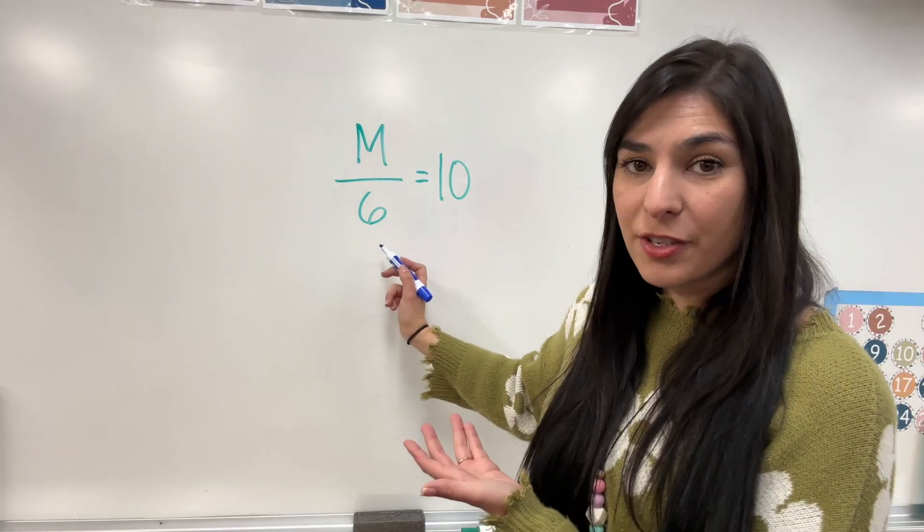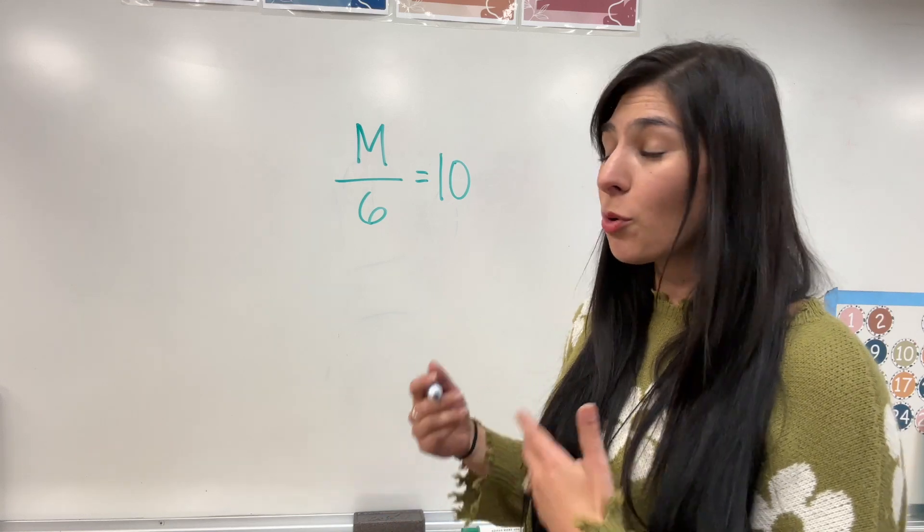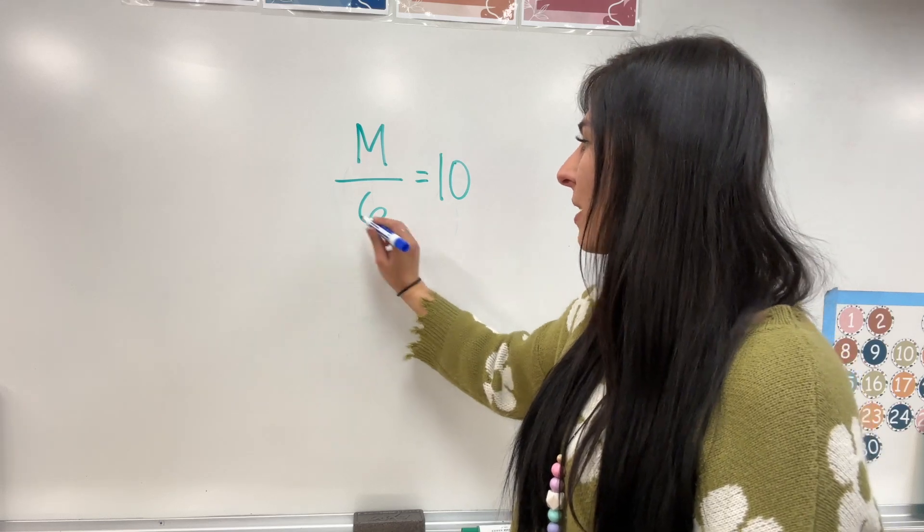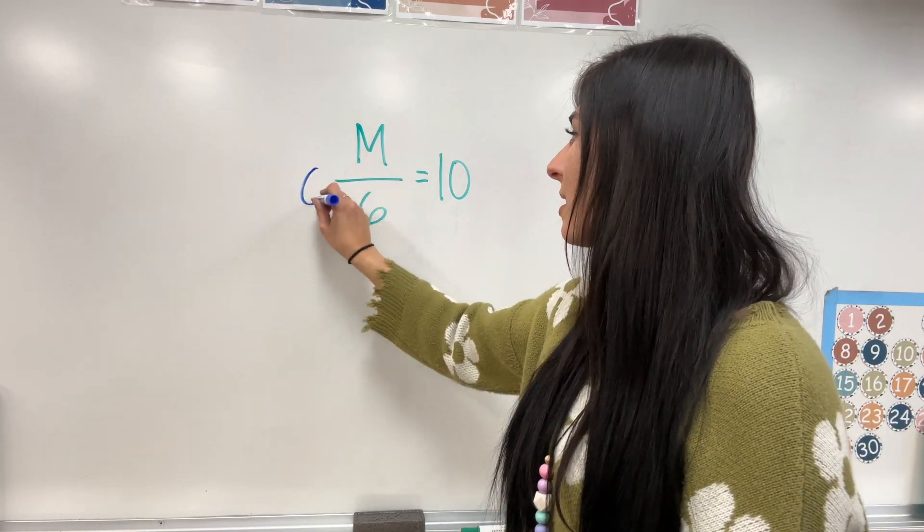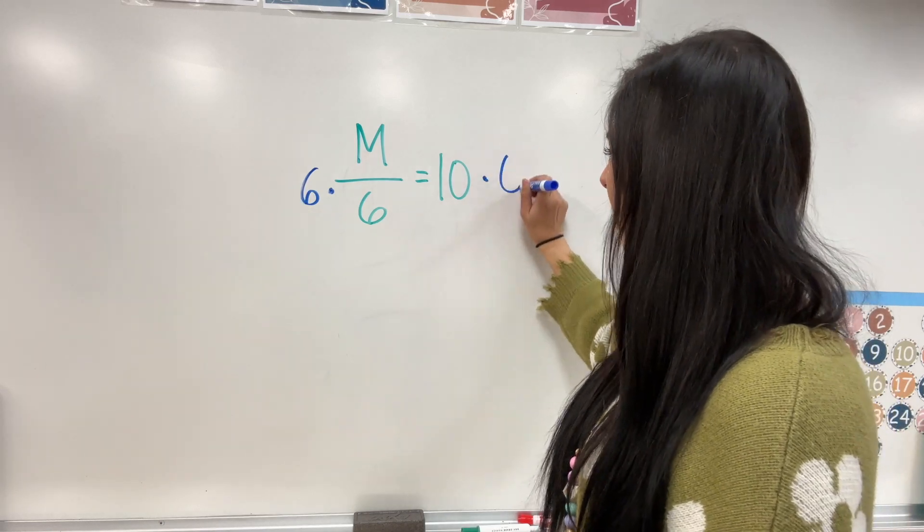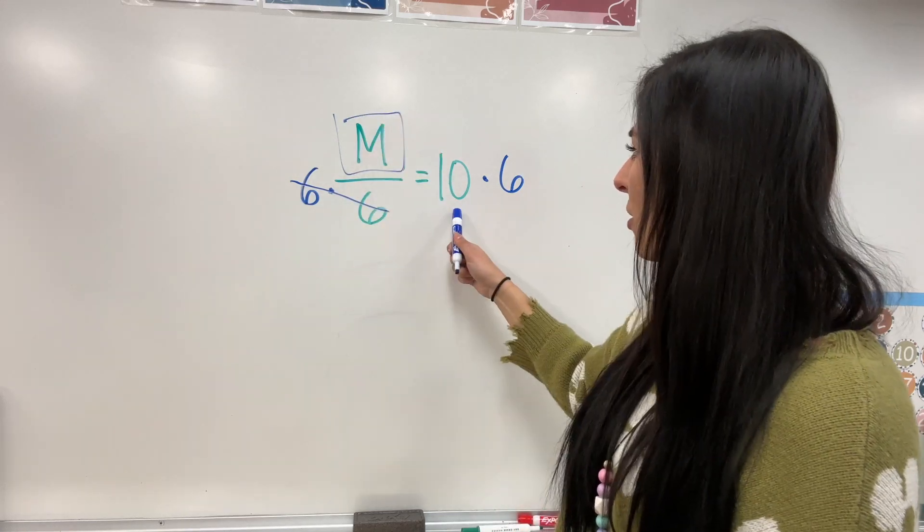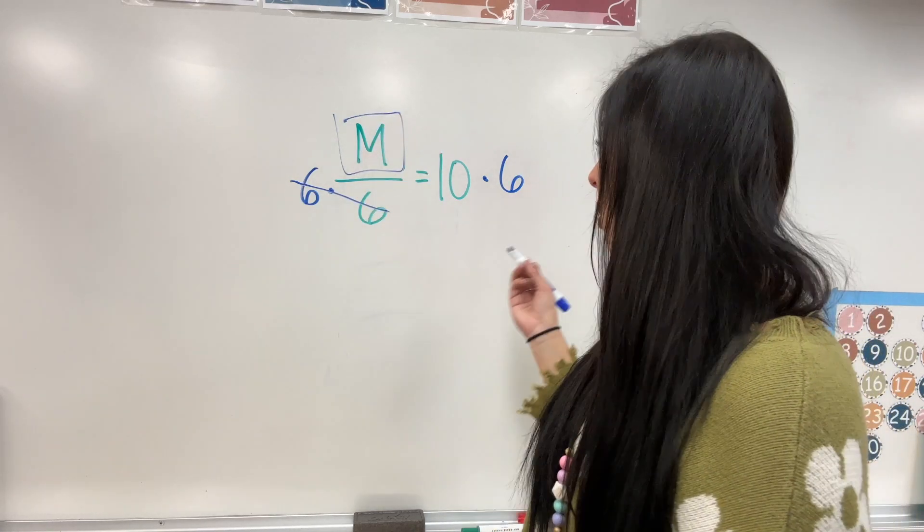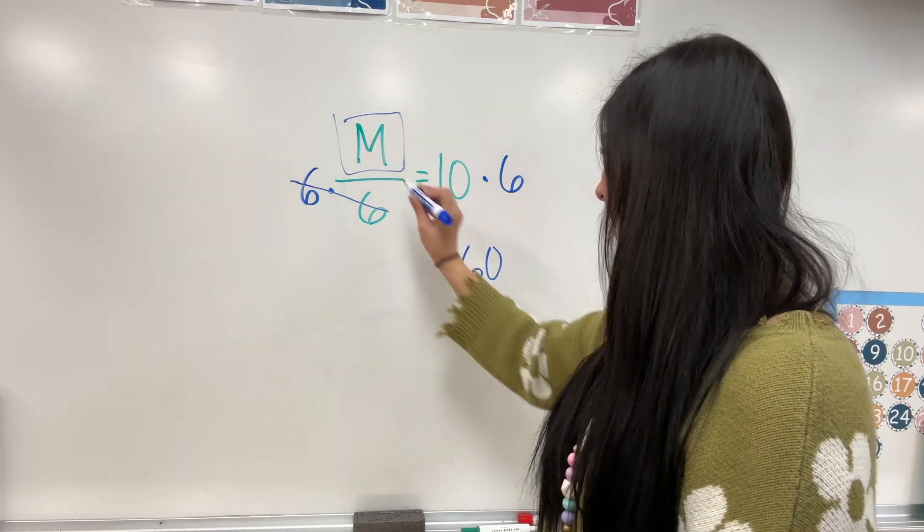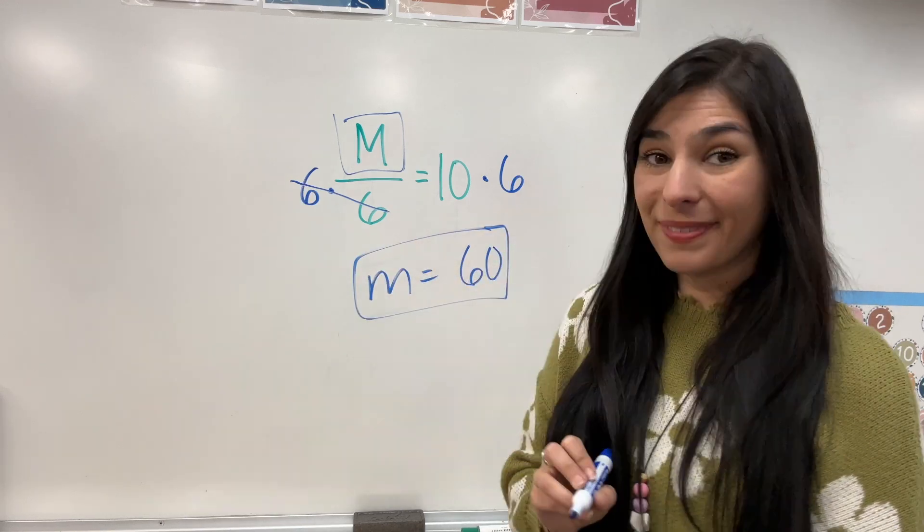So, like I said, this is a division problem. The inverse operation of division is going to be multiplication. So, we're going to multiply both sides by this denominator. The denominator is 6. That means I'm going to multiply this by 6. What you do to one side of the equal sign, you must do to the other. Now, these get to cancel each other out, leaving M by itself. And, now, I just have to solve 10 times 6. So, 10 times 6 equals 60. M equals 60. There you go.